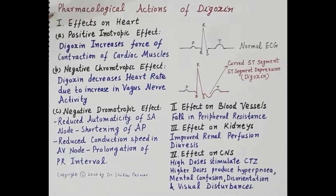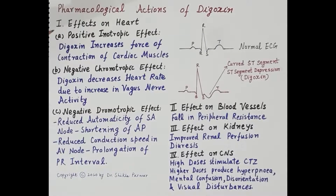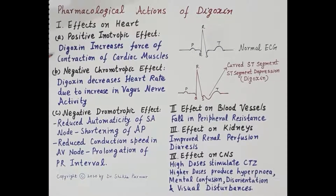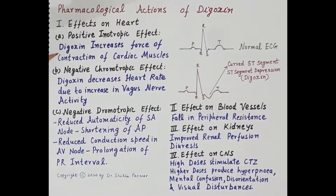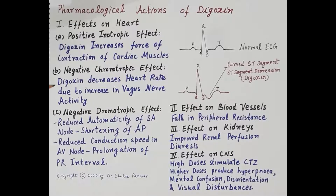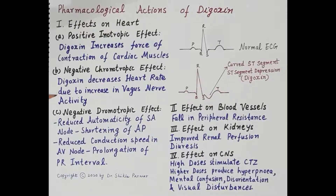Now let's study the pharmacological actions of digoxin. First, the effect on the heart: digoxin shows a positive inotropic effect — it causes a dose-dependent increase in force of contraction of cardiac muscles. Digoxin also shows a negative chronotropic effect, decreasing heart rate. Improved circulation due to increased cardiac output enhances vagal nerve activity, which in turn decreases heart rate.